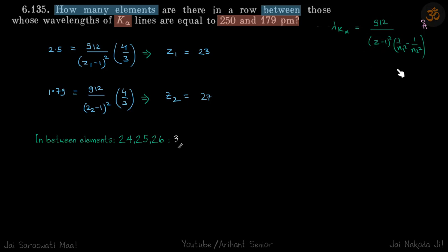So lambda k-alpha is this quantity. So here it is k-alpha. So n1 will be 1 and n2 will be 2.